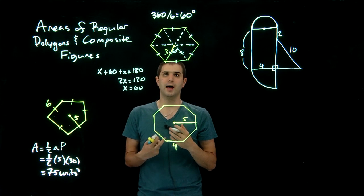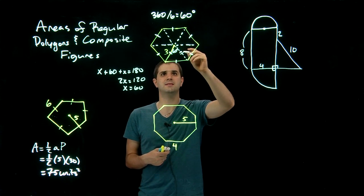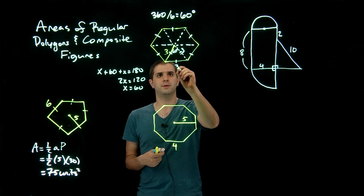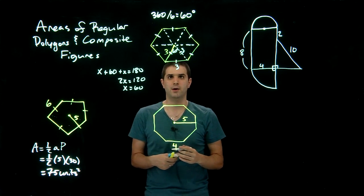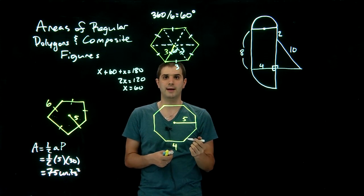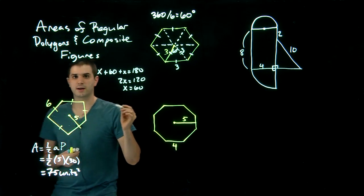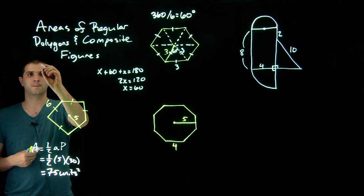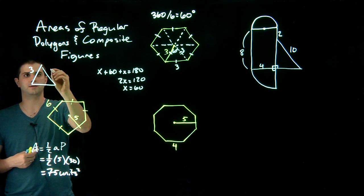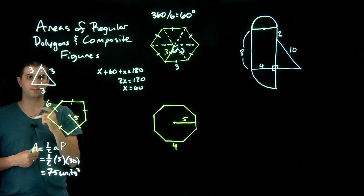Since the triangle is equilateral and the radius is 3, all sides are 3. So we know how to find the perimeter, but we still don't have the height — the apothem. We need to take this equilateral triangle with sides 3, 3, 3, and find its height.